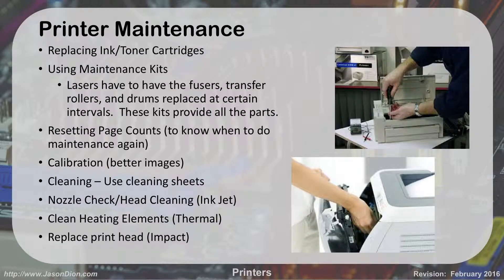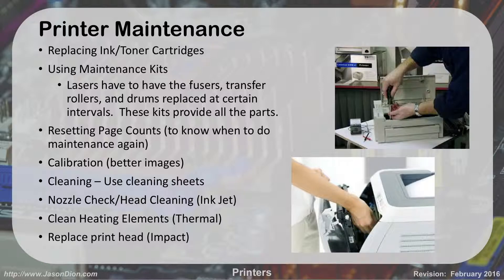For printer maintenance, with inkjets and laser printers we have to change out the ink or toner cartridges — usually a simple process of turning off the printer, removing the old cartridge, and putting in the new one. For laser printers, you can buy a maintenance kit that includes fusers, transfer rollers, and drums that can be replaced at certain intervals, extending the life of the printer. With inkjet printers, they're generally low enough in cost that we just replace the unit rather than doing maintenance.